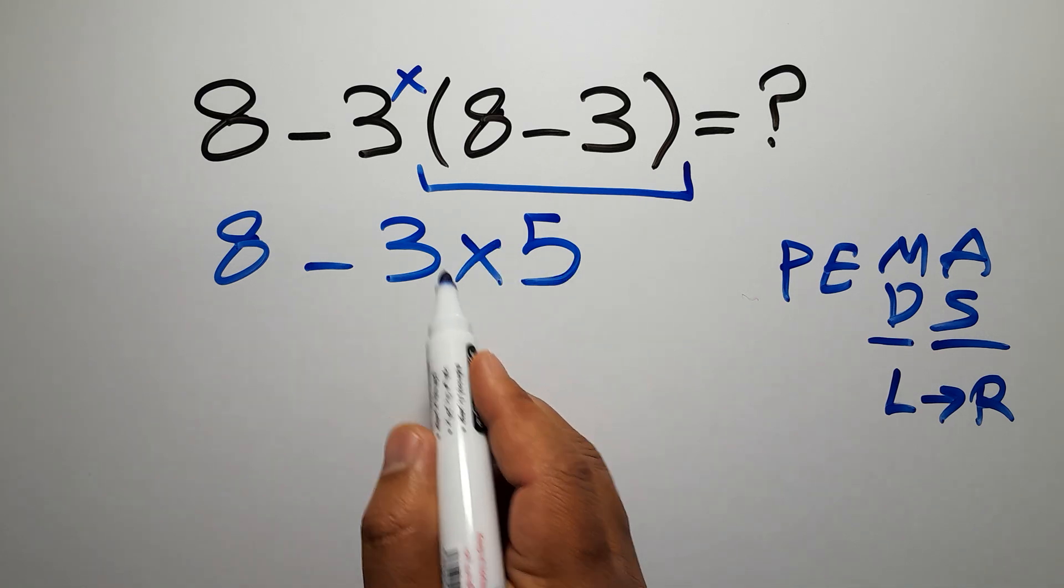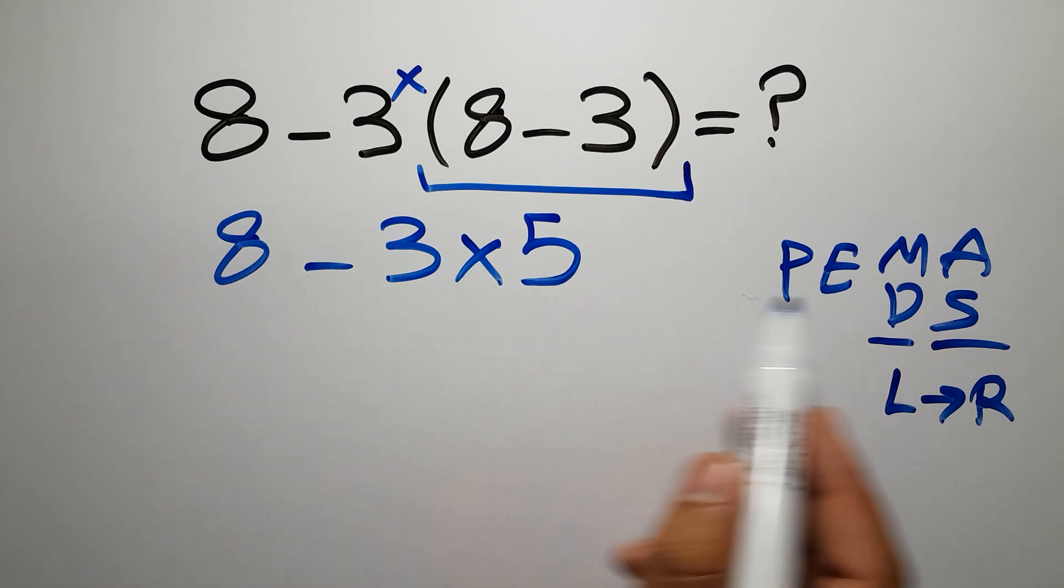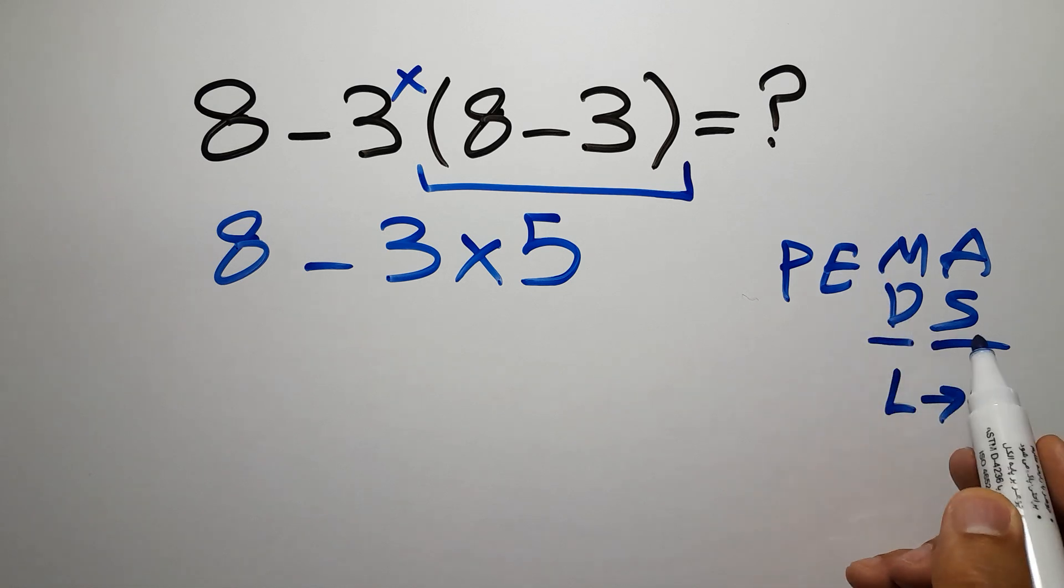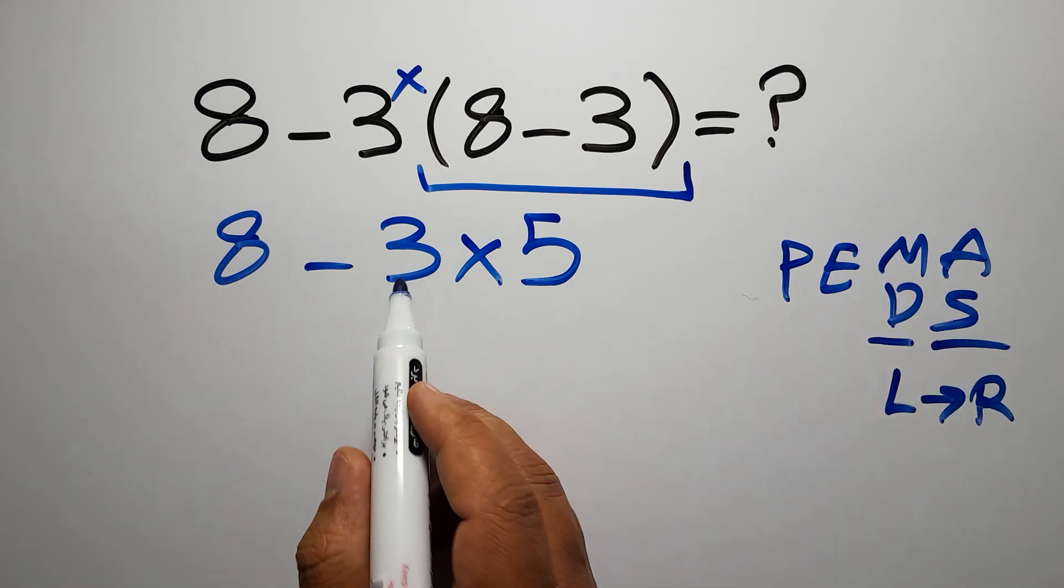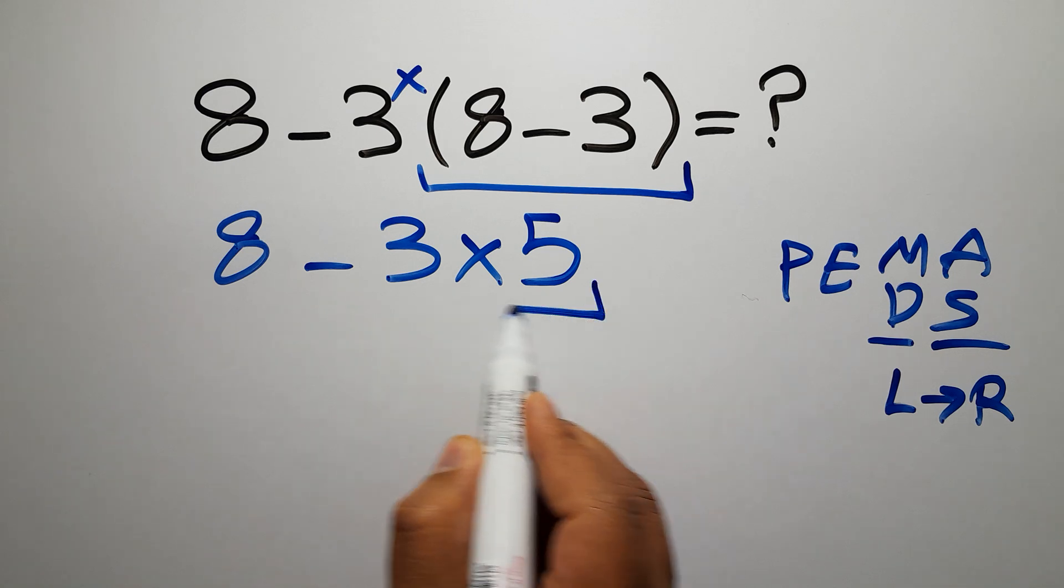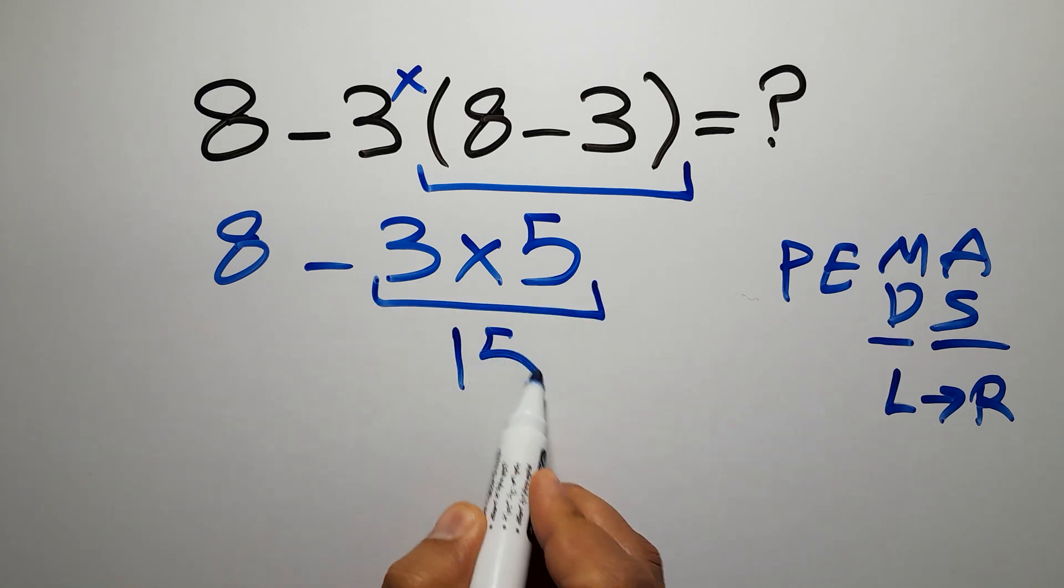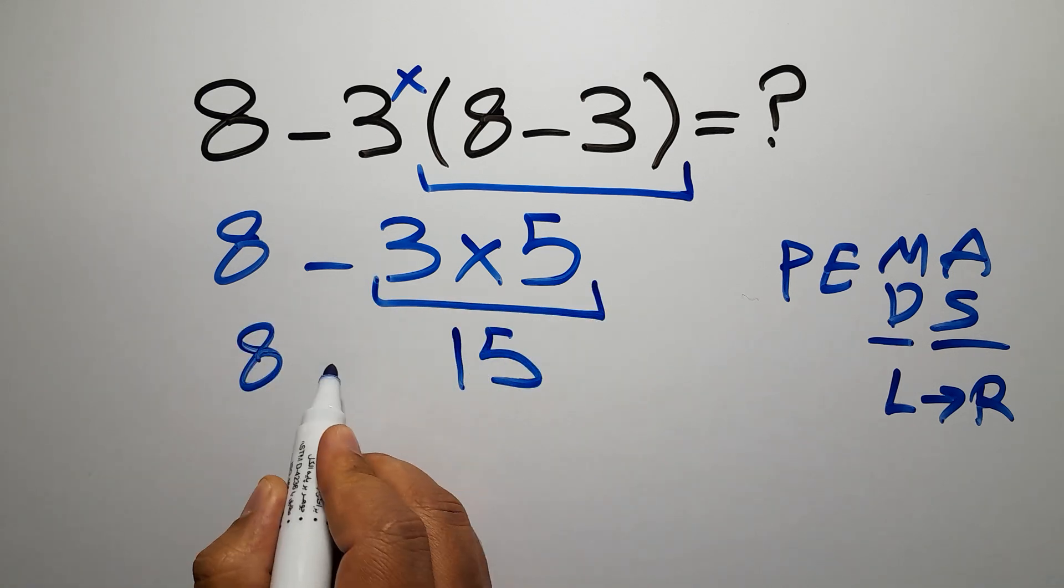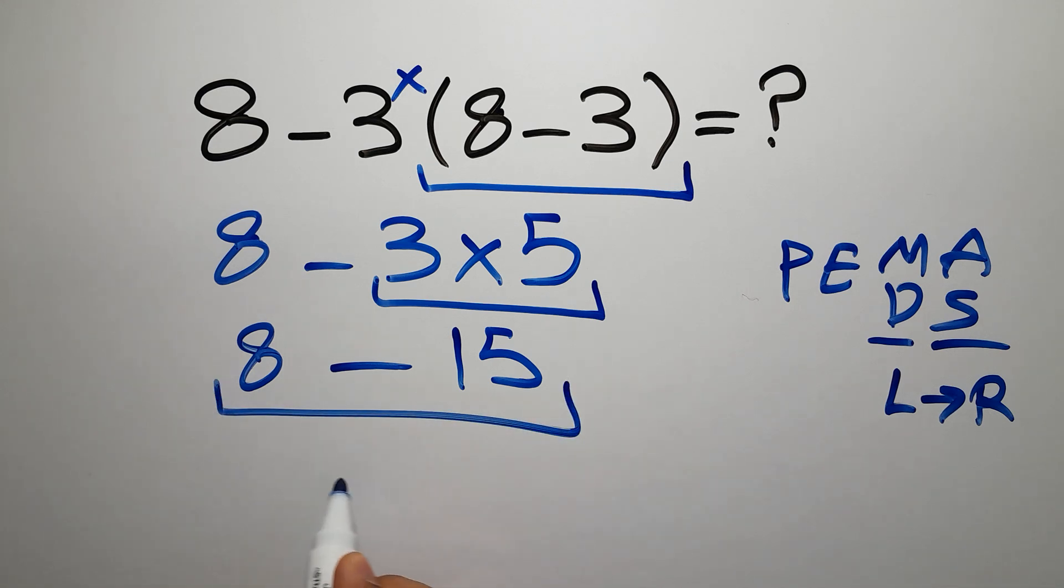In PEMDAS, multiplication comes before subtraction, so now we do three times five which equals fifteen. Eight minus fifteen gives us negative seven, and this is our final answer to this problem.